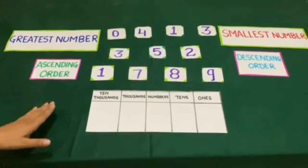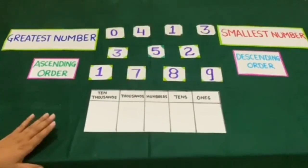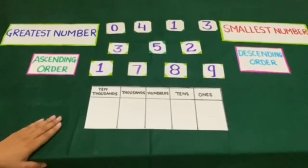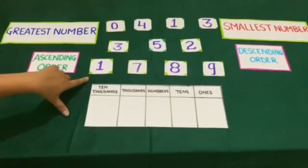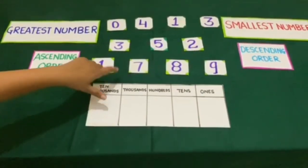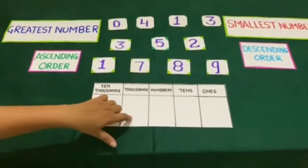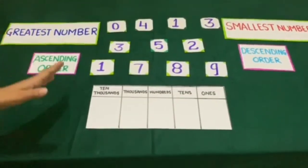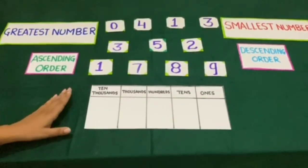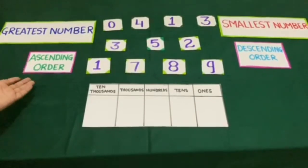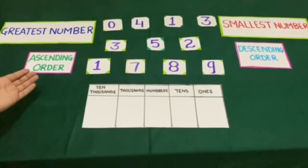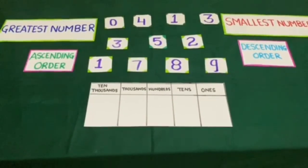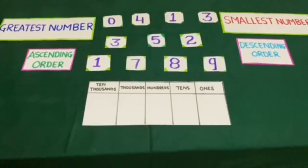Now we have revised everything we have learnt about numbers. For practice at home you can make digit cards, place them in a place value chart, do comparison, find the greatest number, smallest number, arrange them in ascending order, descending order, and have fun. Thank you.